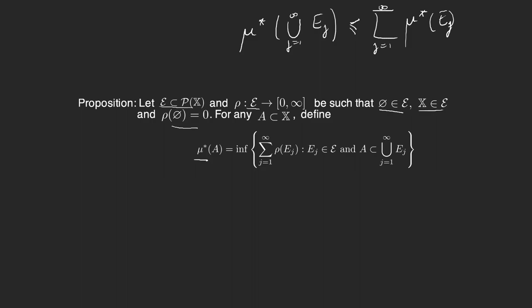When we define μ*(A) for any A ⊆ X as the infimum over all sums of ρ evaluated on sets E_j that are in the family E and that cover A, what happens is that this μ* is an outer measure. So given any set E ⊆ parts of X that contains the empty set and the whole set, and a function ρ defined over E with ρ(∅) = 0, we are able to find an outer measure.